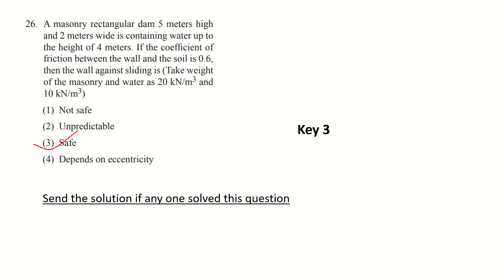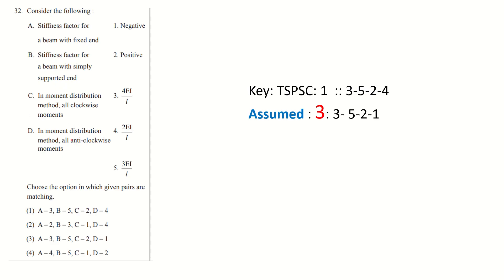Any mass structure in soil and water conditions must be designed as a safe structure. When you don't know the solution, always make the answer on the safe side, as most structures should be safe. So the correct answer is D. Regarding Question 32/33, TSPSC has given key 4, but I am assuming option D should be 4 — in the moment distribution method, all anticlockwise moments should be negative. Please cross-check this.